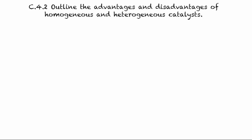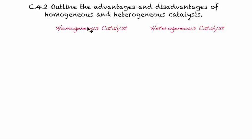In the previous video, you would have learned that homogeneous catalysts are where the reactants and the catalyst are in the same state or phase, and this is often liquid-liquid. The heterogeneous catalyst is when you have the catalyst and reactants in different phases or states, and usually that would mean you have a solid-state catalyst with a gas-phase reactant passing by it, adsorbing.